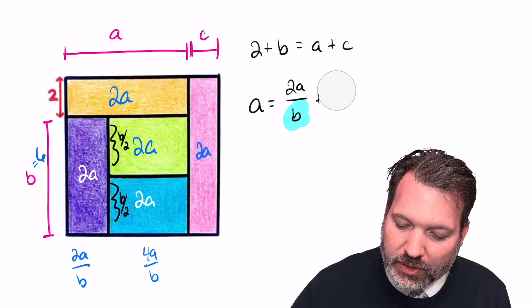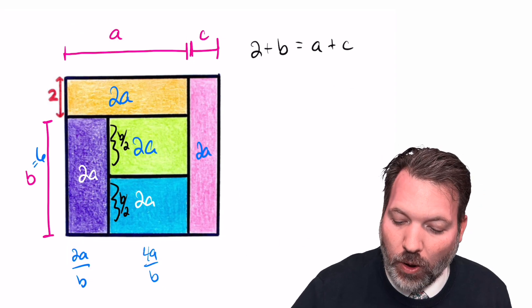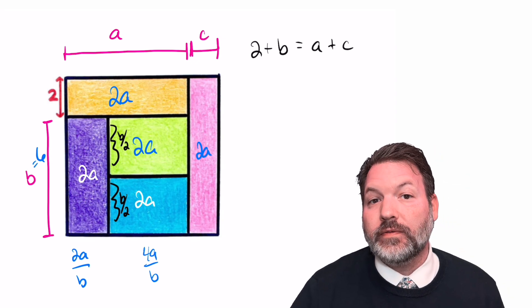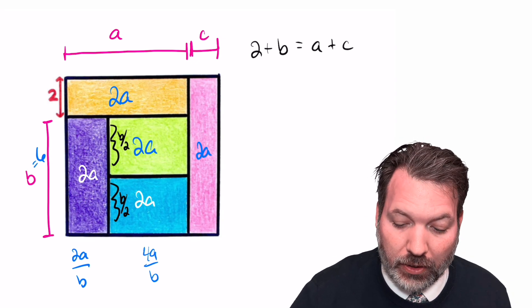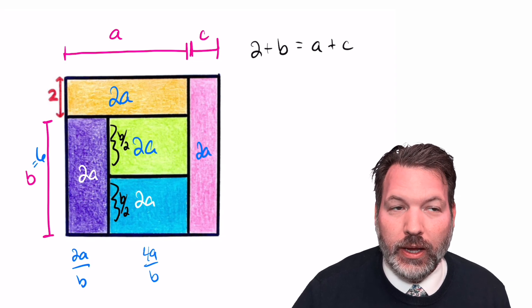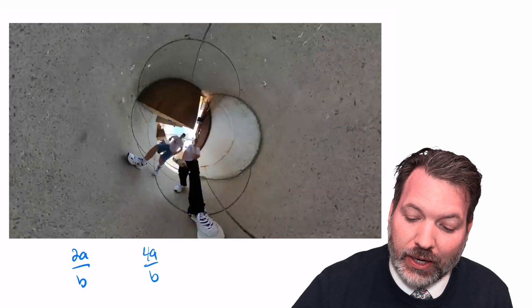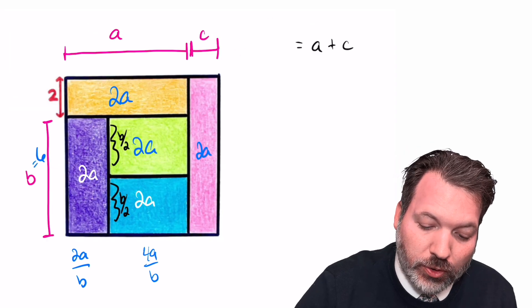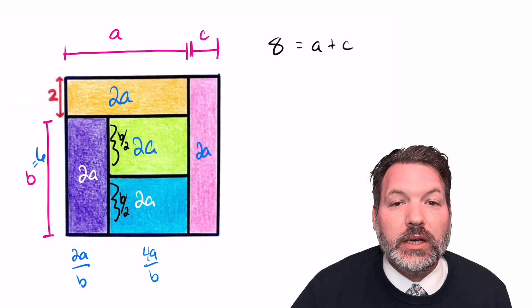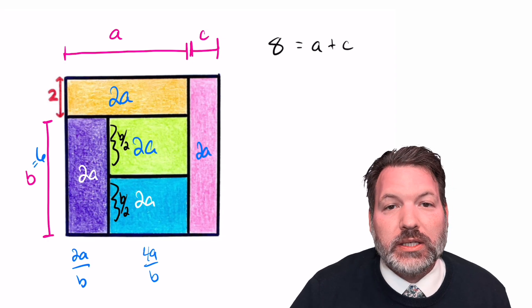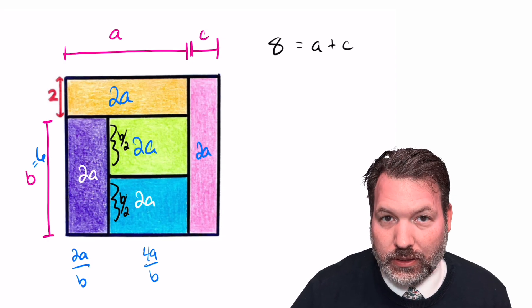Now, sometimes on these problems, I get a little cheeky, and I say I'm going to leave it as an exercise to the viewer to figure other stuff out, like what is a here and what is c here. And I could do that, but I'm just going to go ahead and solve for a and c anyway. We can say, of course, 2 plus b, that is 2 plus 6 equals 8. And so we know that the sum a and c is 8.